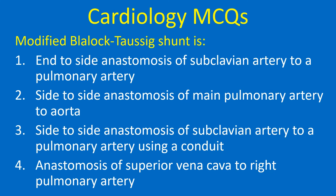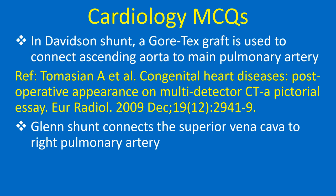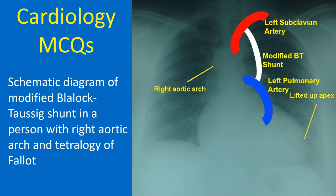Modified Blalock-Taussig shunt is: 1. End-to-side anastomosis of subclavian artery to a pulmonary artery, 2. Side-to-side anastomosis of main pulmonary artery to the aorta, 3. Side-to-side anastomosis of subclavian artery to a pulmonary artery using a conduit, 4. Anastomosis of superior vena cava to right pulmonary artery. Correct answer: 3. In classic Blalock-Taussig shunt, the subclavian artery is divided and anastomosed to the pulmonary artery as an end-to-side anastomosis. In the modified shunt, a Gore-Tex graft connects subclavian artery to pulmonary artery. In the Davidson shunt, a Gore-Tex graft connects the ascending aorta to the main pulmonary artery. Glenn shunt connects the superior vena cava to the right pulmonary artery.